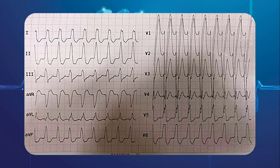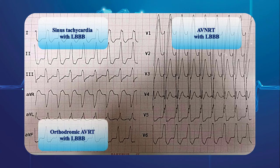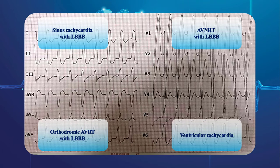Which of the following is the correct answer? 1. Sinus tachycardia with LBBB. 2. AVNRT with LBBB. 3. Orthodromic AVRT with LBBB. 4. Ventricular tachycardia.